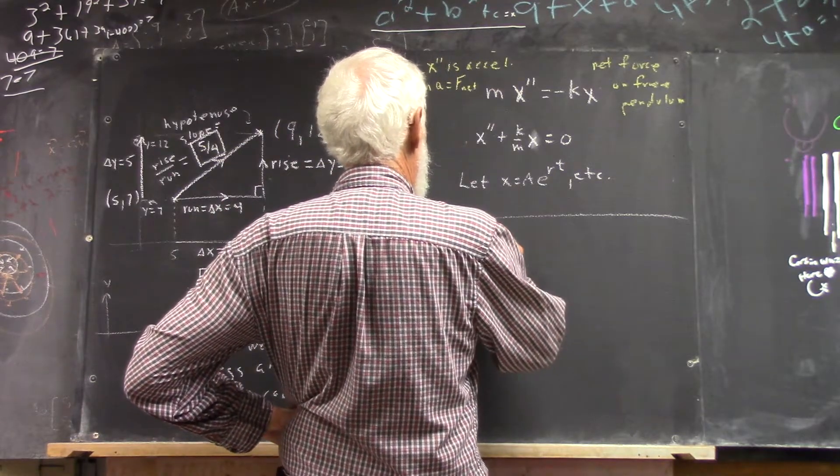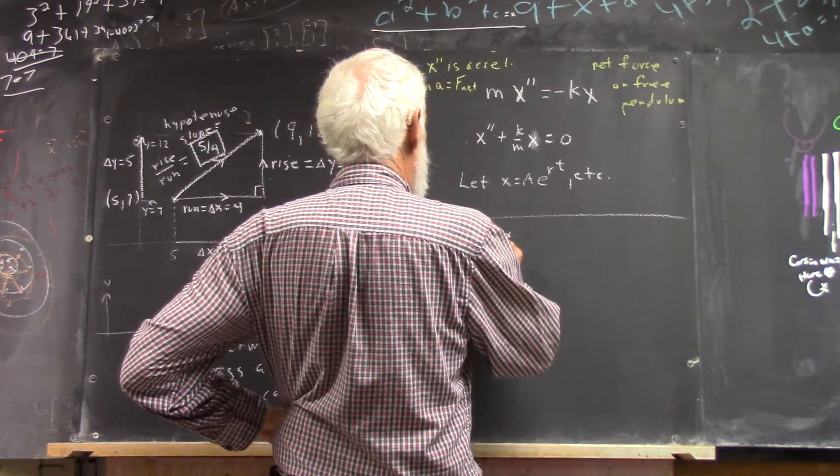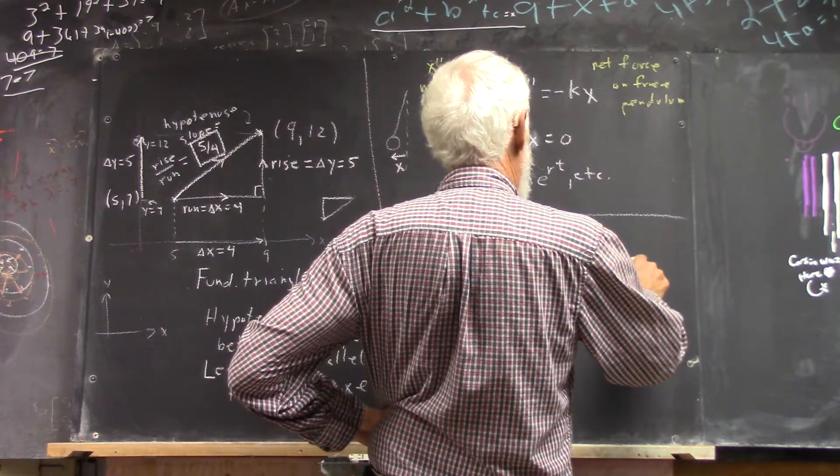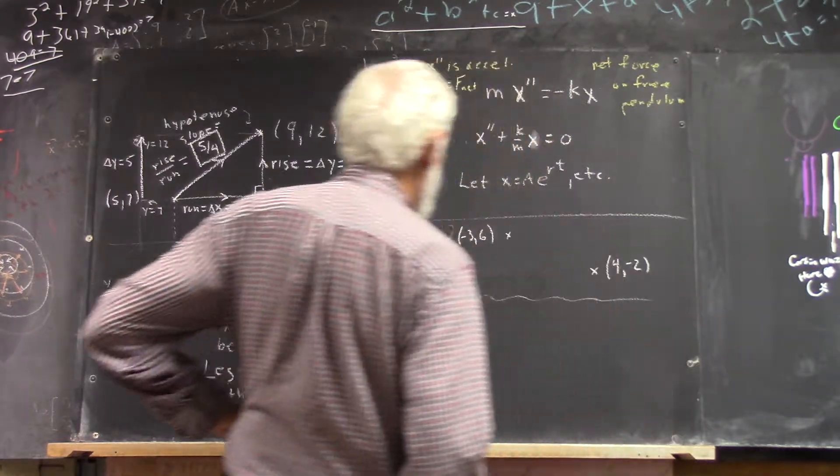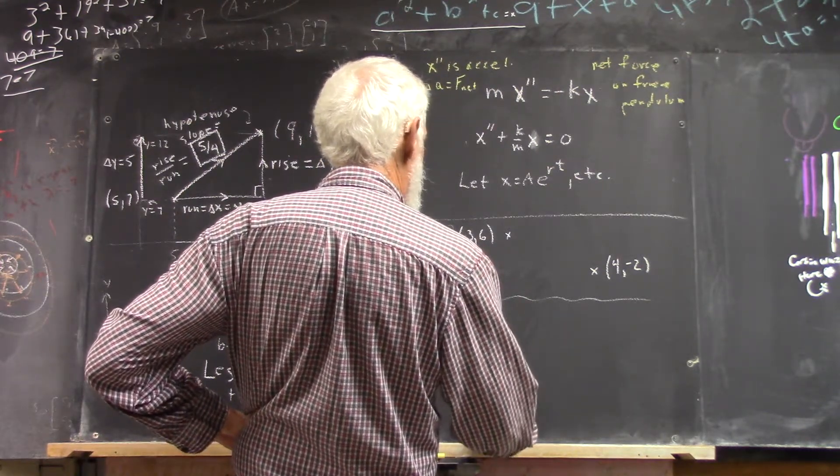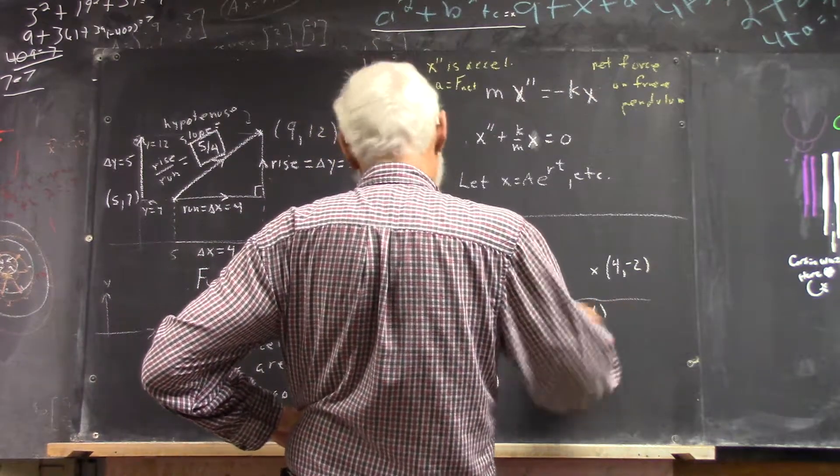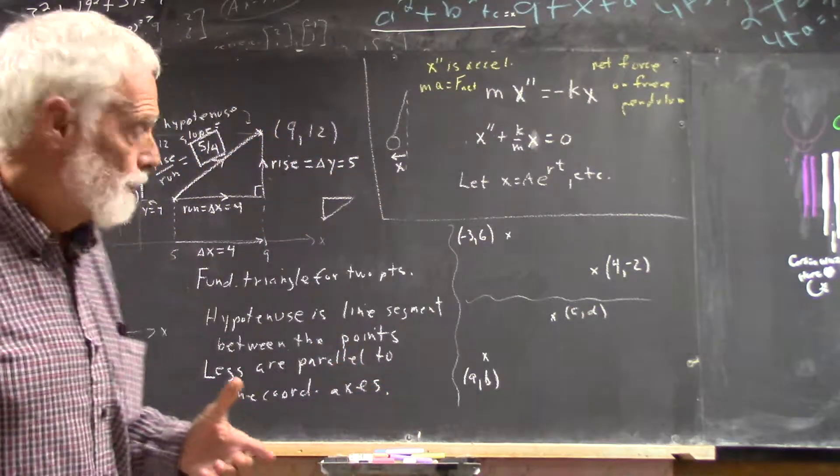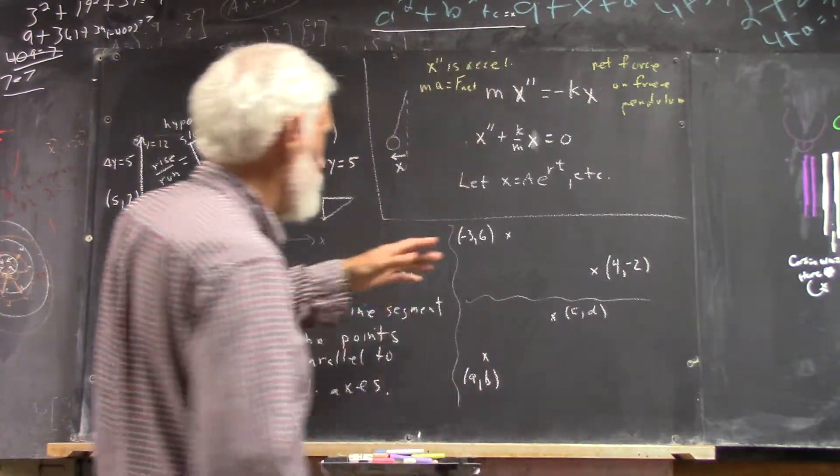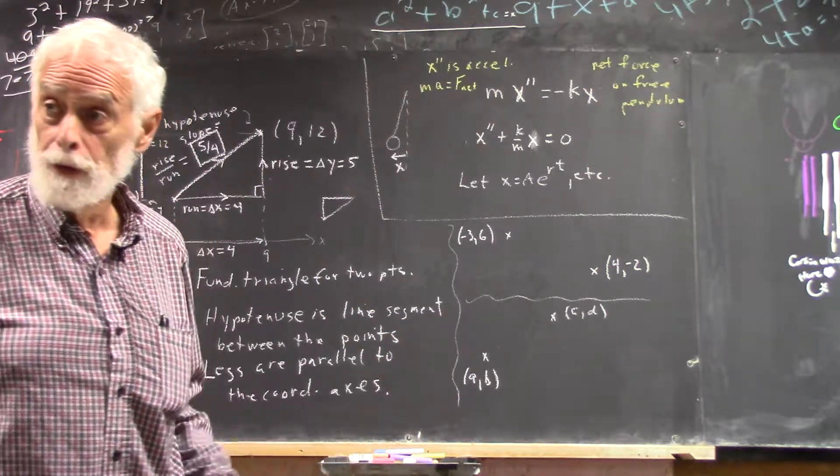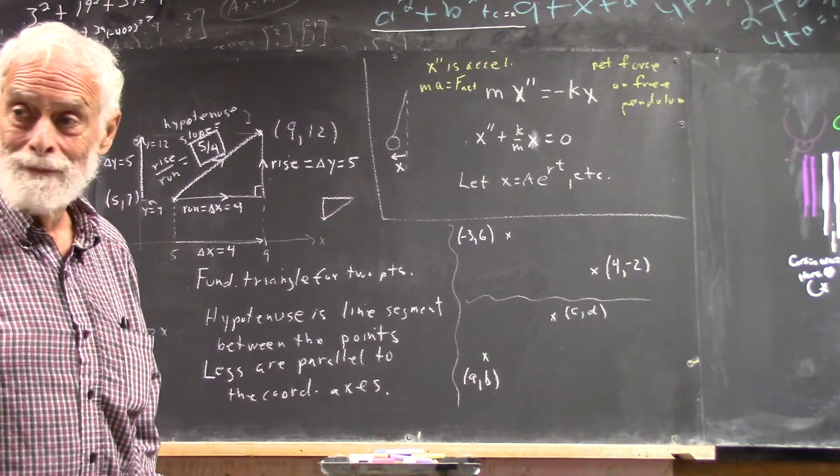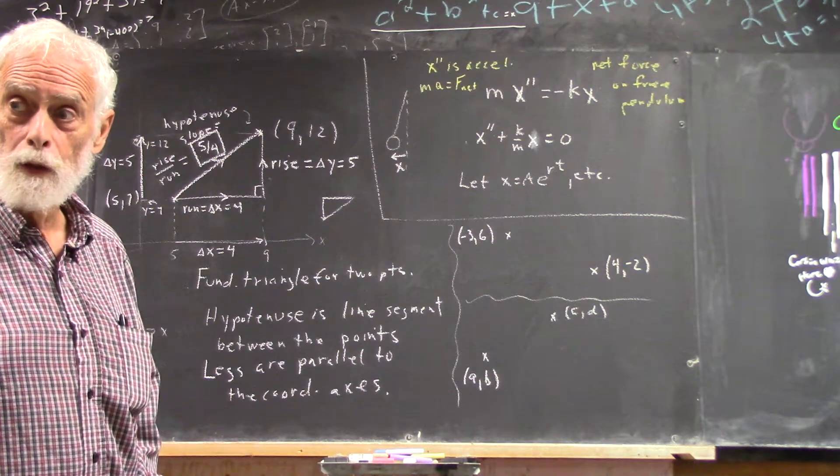So now I want you to do the same thing for the points negative 3, 6, and 4, negative 2. And then for the points A, B, and C, D. I want you to show me fundamental triangles for both of those pairs of points. Copy that down because I'm going to set it over here in a minute so I can wash the boards behind her. You can always look over there. If you want a closer look, you're welcome to get up and walk over to it.